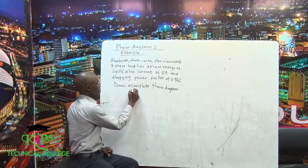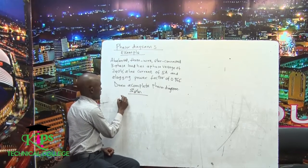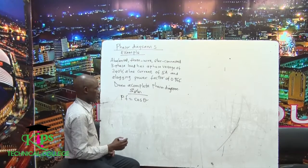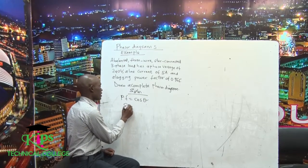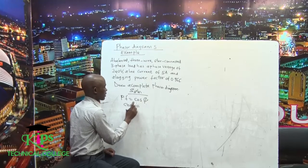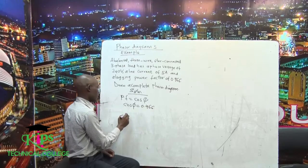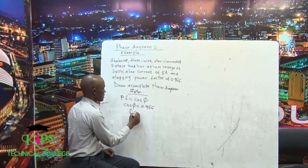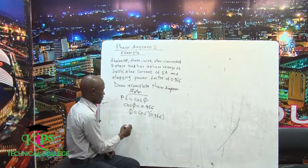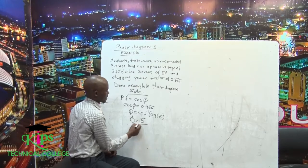The first thing you need to do is get the angle. We know that power factor equals cos(theta), or as commonly called, cos(phi). We have been given cos(phi) equal to 0.966. So if you want to get phi, you take the inverse cosine of 0.966. Using your calculator, this comes to 15 degrees.